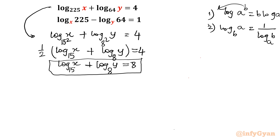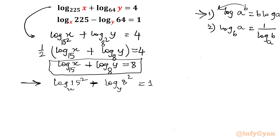Similarly, for the second equation: log 15 squared base x minus log 8 squared base y equals 1. By property 1, the exponent comes down, giving: log 15 base x minus log 8 base y equals 1/2. This is equation number 2.